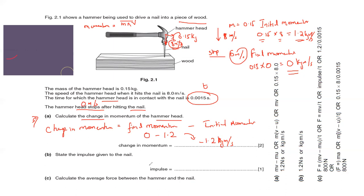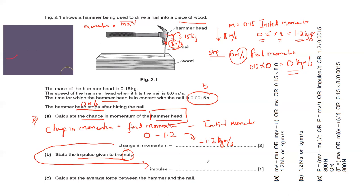For the second part, we calculate the impulse of the nail. When objects collide, the impulse experienced by each is the same. So the impulse of the nail equals the change in momentum of the hammer head, which is 1.2 kg·m/s. Since this is only a one-mark question, we just restate the previous answer.